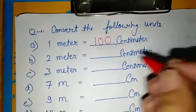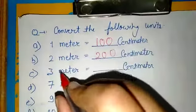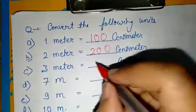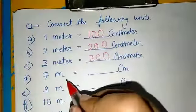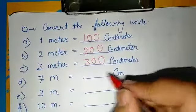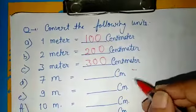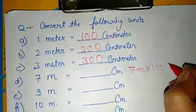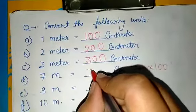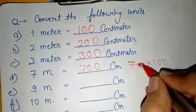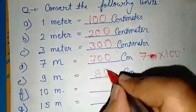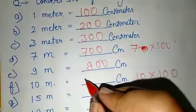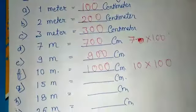2 meters means the meter scale was used 2 times — one time gives 100, second time gives 200. Similarly, 3 meters means the meter scale was used 3 times: 100, 200, 300 cm. So what about 7 meters? 1 meter has 100 cm, so 7 meters into 100 cm equals 700 cm. 9 meters equals 900 cm. 10 meters into 100 equals 1000 cm.